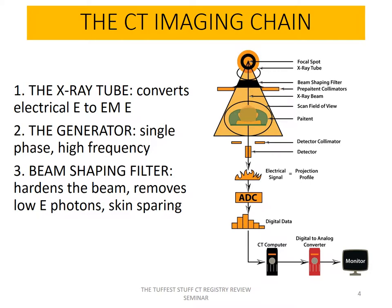The X-ray tube is where there's conversion of electrical energy to electromagnetic energy, followed by the generator. In most modern MDCT systems, the generator is a single-phase, high-frequency piece of equipment. The beam shaping filter's function is to harden the beam, removing low-energy photons, which has a dose-reducing skin-sparing effect.